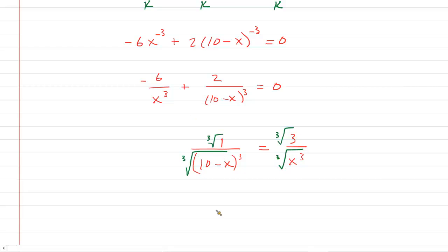The cube root of 1 is 1. Put this over the cube root. Now this is cool because the cube root and the cube cancel. So you get just 10 minus X there. The cube root of 3 is the cube root of 3. I'm very smart. And over here, the cube root and the cube cancel to just make X.